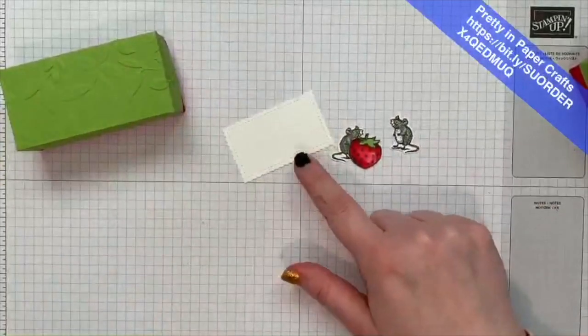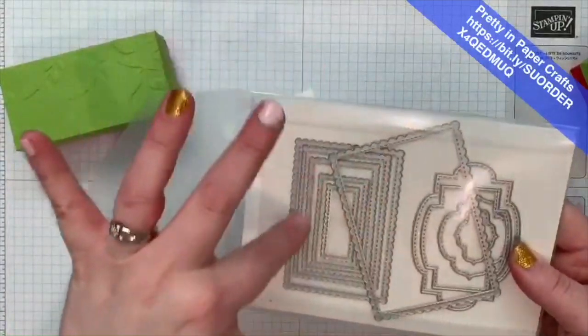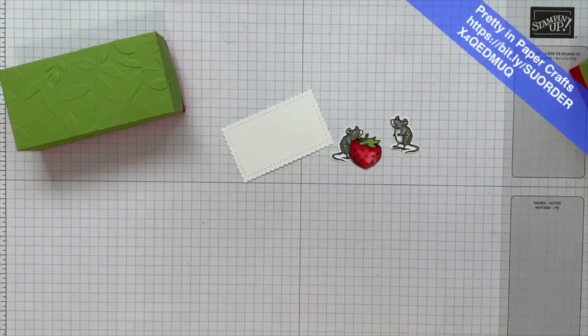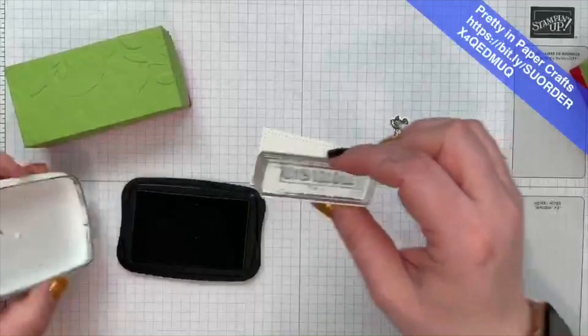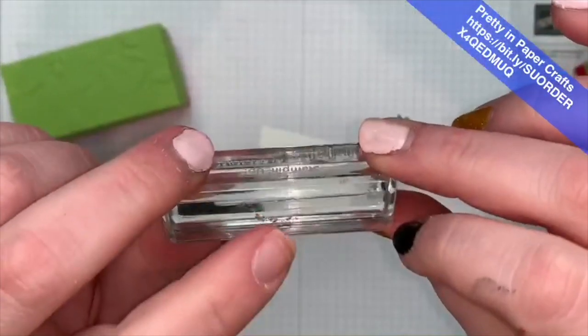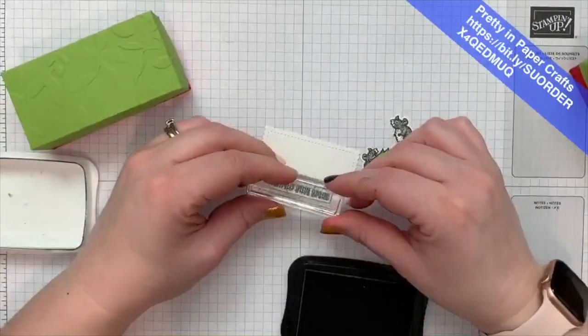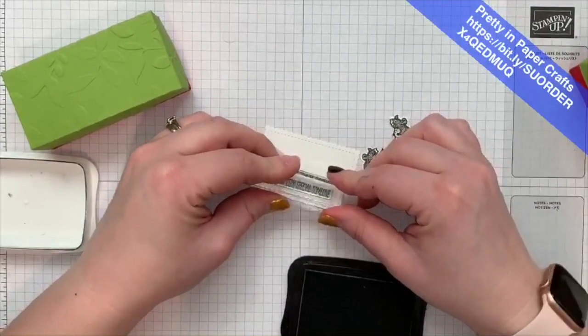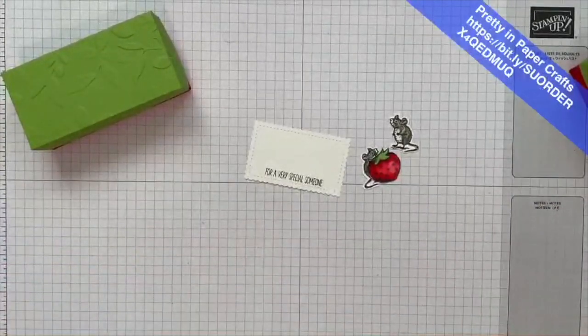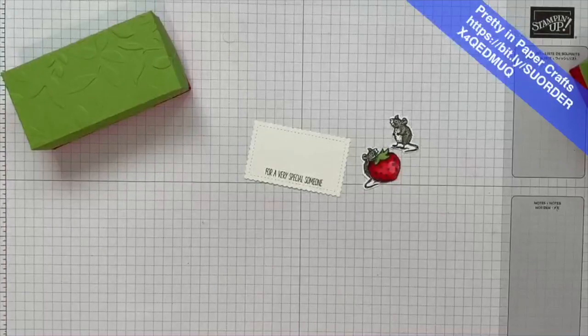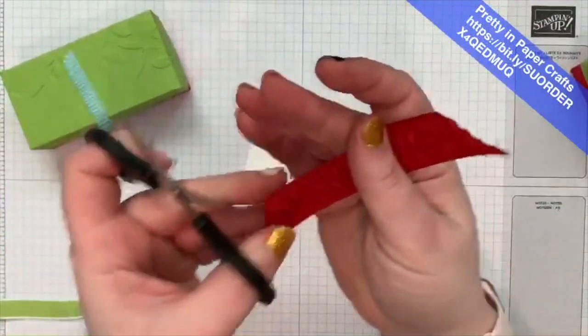I went ahead and I already cut out the label that we're gonna glue them on and remember that's from the Stitch So Sweetly dies. I just used one of the smaller ones and I do want to stamp a little sentiment for a very special someone and wouldn't that be so cool if it said for a very special someone? Of course the berry didn't come with the stamp set but I do love a little pun a little play on words that's always fun. So I'm just stamping this down at the bottom in the center for a very special someone